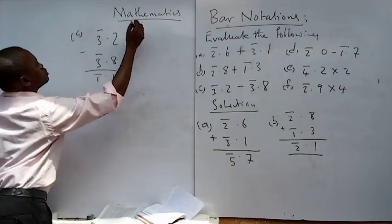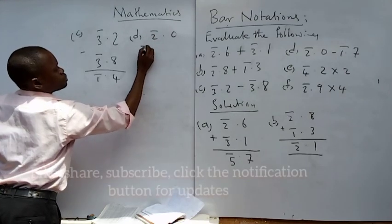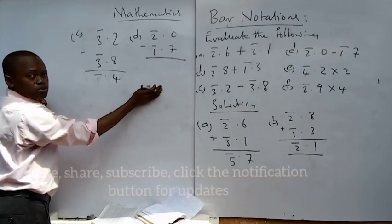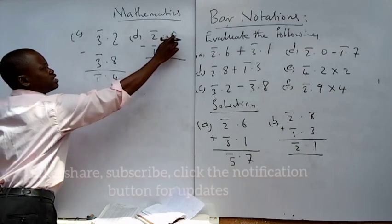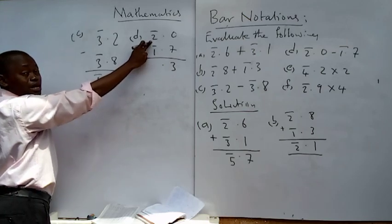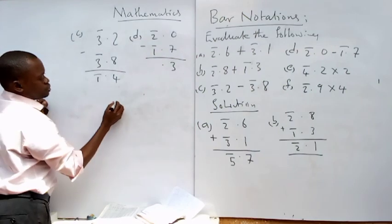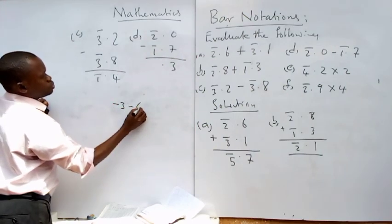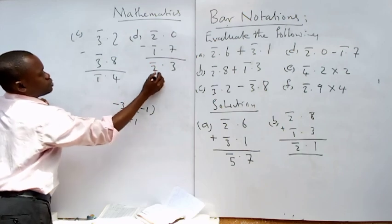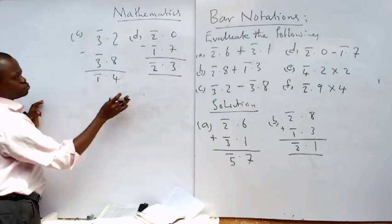Example (d): bar 2.0 minus bar 1.7. Look at that subtraction: 0 minus 7 is not possible, so I borrow one from here. With that borrowed 1 it becomes 10, and 10 minus 7 gives me 3. This is now bar 3 — because you removed from bar 2, making it minus 3. Then bar 3 minus bar 1 is bar 3 plus 1, which gives us bar 2. That is the result: bar 2.0 minus bar 1.7 equals bar 1.3.